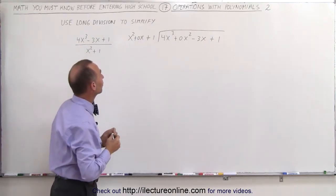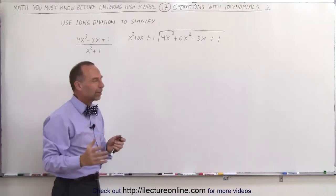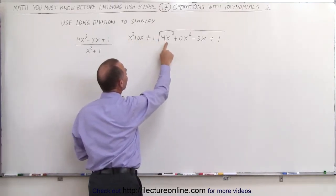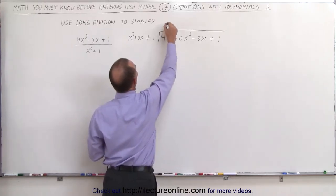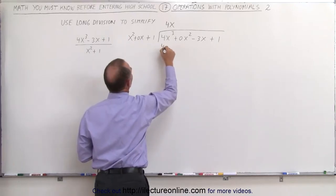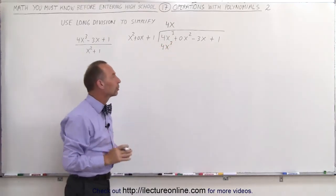So now we tell ourselves x² goes into 4x³ how many times? And the best way to think about it is, what should I multiply this term by to get this? And the answer then would be 4x. So we write 4x because 4x times x² gives us 4x³, so that when we subtract this from that, we get zero. That's the ultimate goal here.